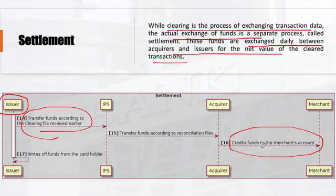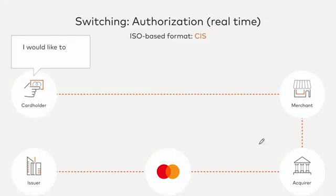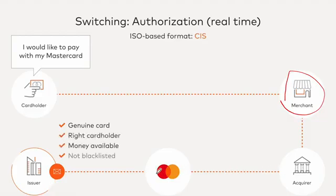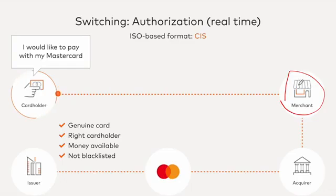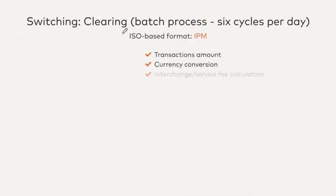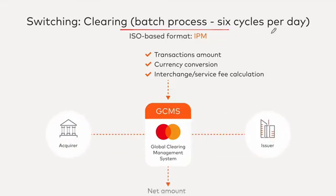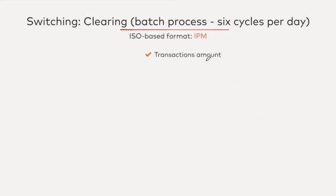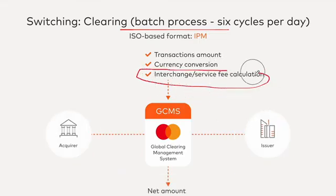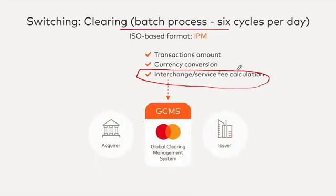Looking at a specific Mastercard example — as explained on their website — in the authorization step, the cardholder swipes their Mastercard at the merchant POS, it goes to the acquirer, then via the Mastercard network to the issuer. The issuer checks whether it's a genuine card, funds are available, and it's not blocklisted, then sends back an approval or denial to the cardholder. Clearing then happens as a batch process — six cycles per day — with files containing transaction information, currency conversion, and interchange and service fee calculations.